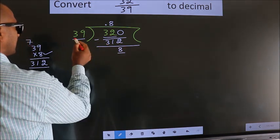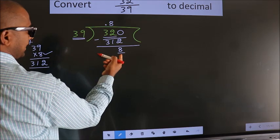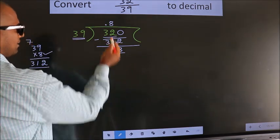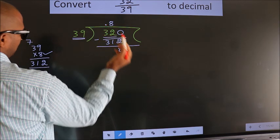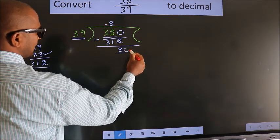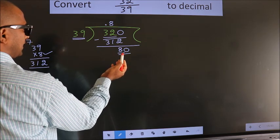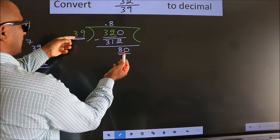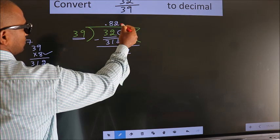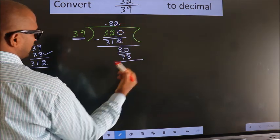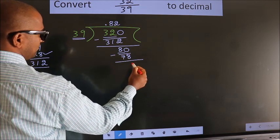Here we have 8. Here 39. 8 is smaller than 39, and we already have the decimal, so we can directly take 0. So 80. A number close to 80 in the 39 table is 39 times 2, which is 78. Now we subtract and we get 2.